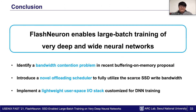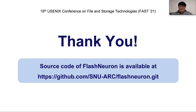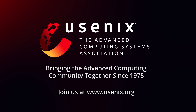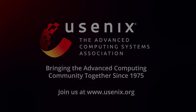In summary, we propose Flash Neuron, the first buffering-on-SSD approach to upload intermediate data to high-performance NVMe SSDs. Flash Neuron enables large batch training of very deep neural networks by using the uploading scheduler and lightweight IO stack. This is the end of my talk. Thank you for listening.